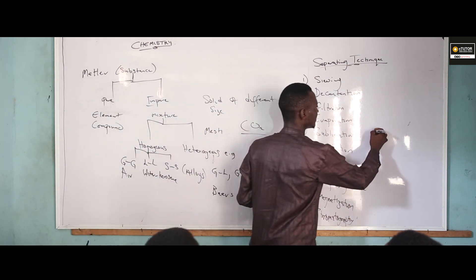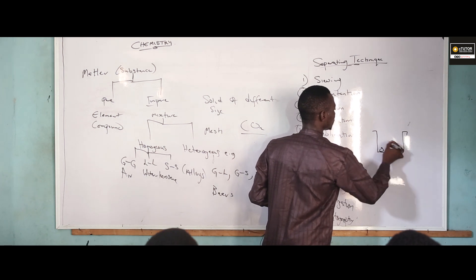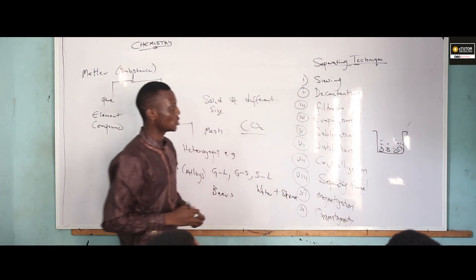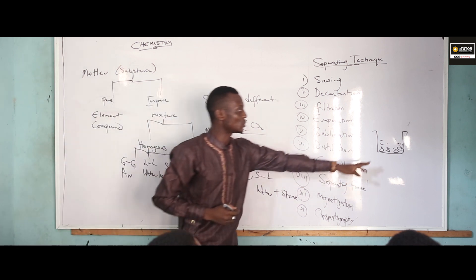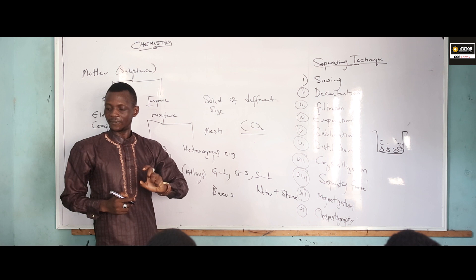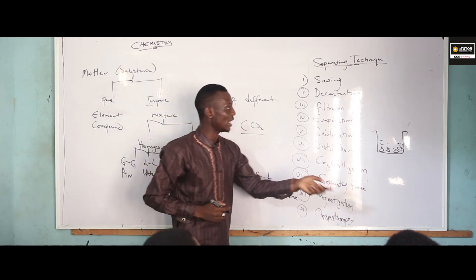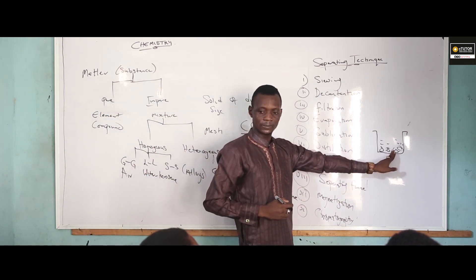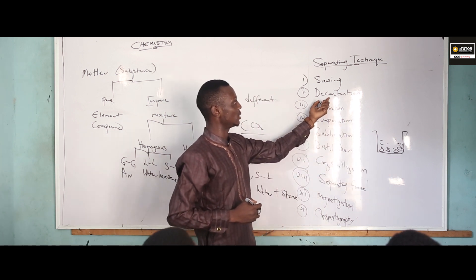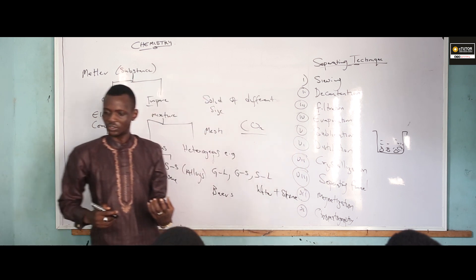For example, water and stone in a container — when you allow this mixture to stand for some hours, it is going to form two distinct layers. The liquid layer can then be decanted off, leaving behind the solid one. That is the method of decantation.